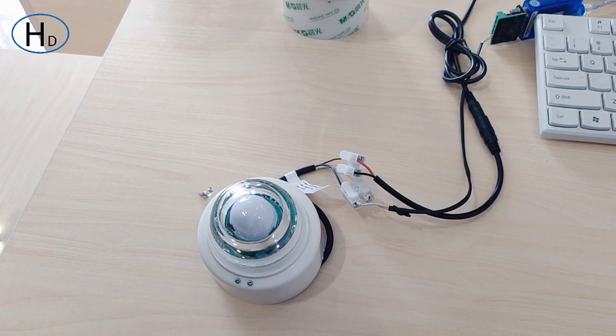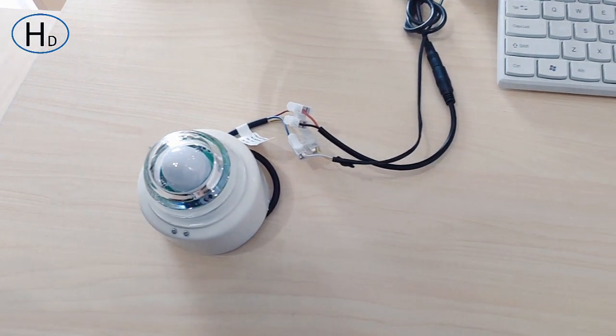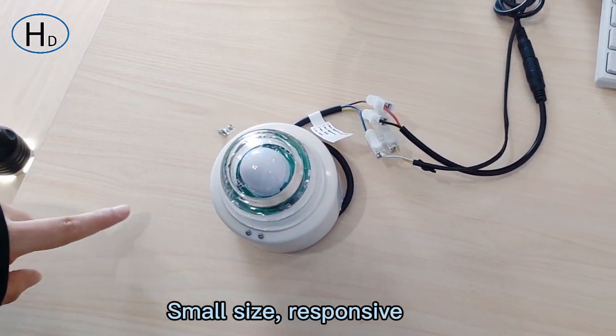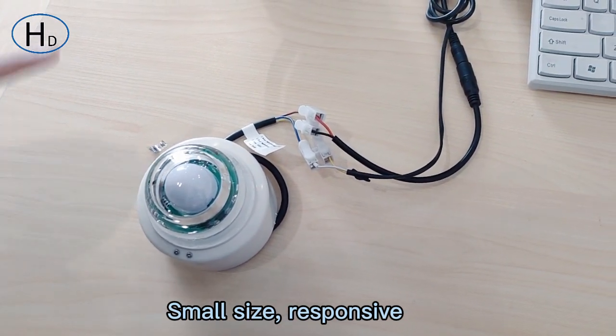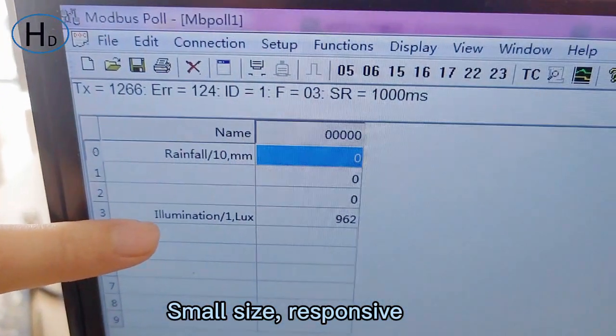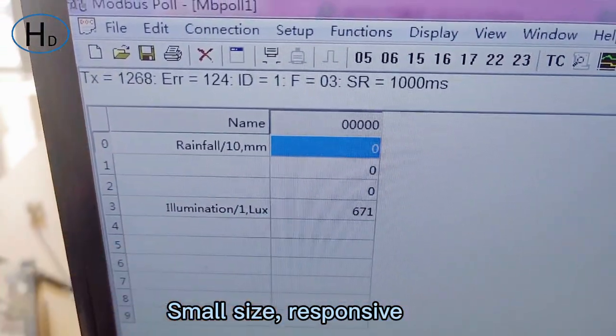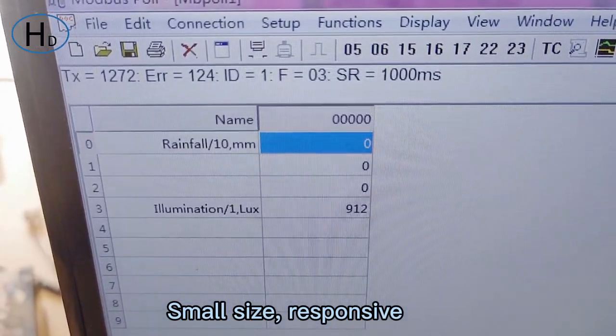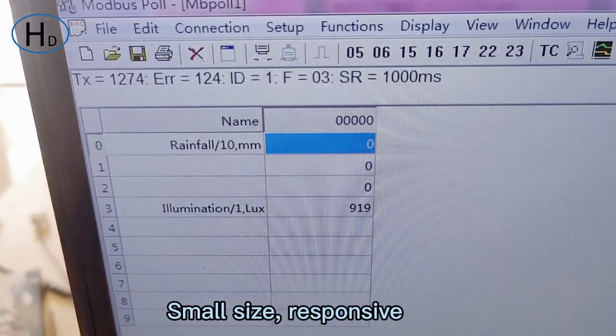Second, we will do the test of illumination. When the optical sensor is under the sunshine, we can see the real-time data of illumination is 912.